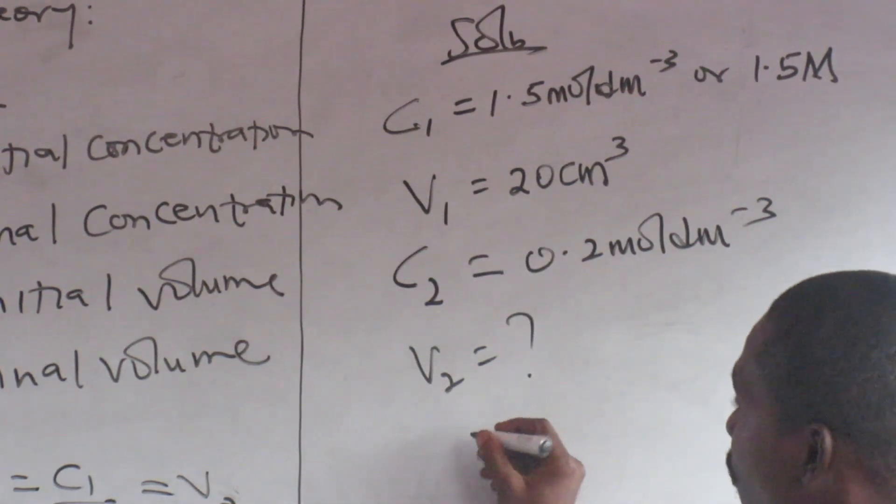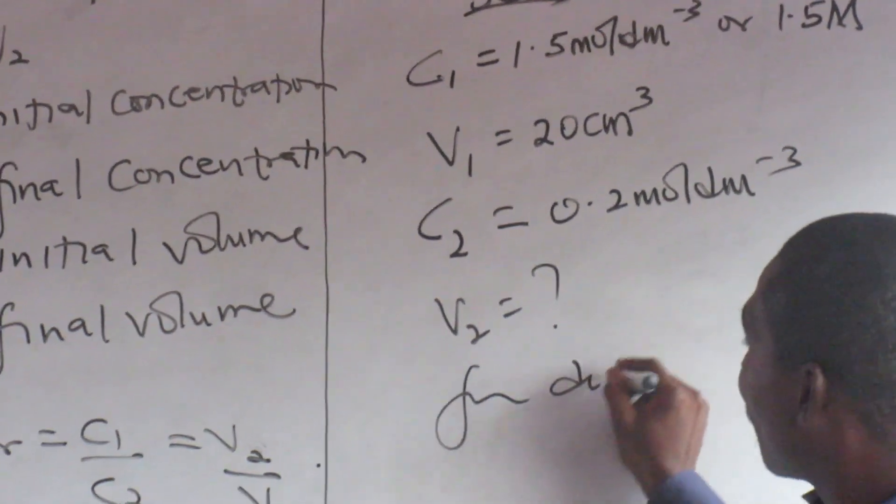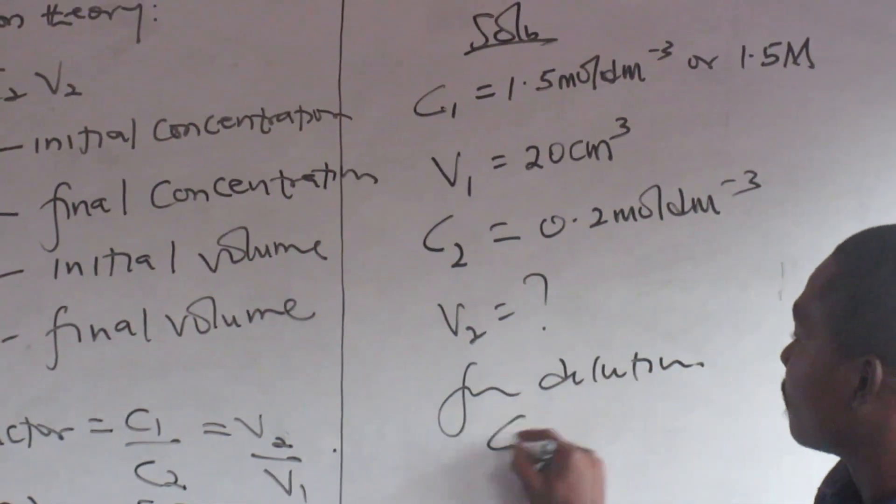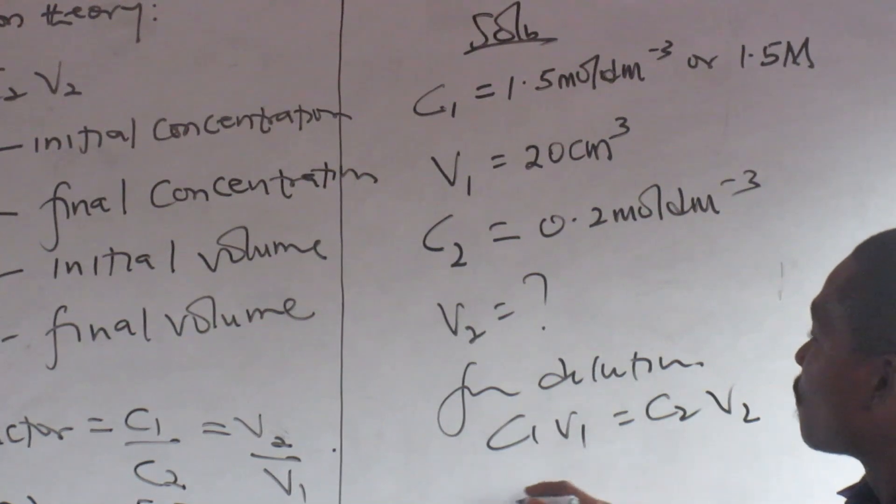C1V1 equals C2V2. That is the dilution theory. Initial, final, initial, final. Dilution factor is C1 over C2 or V2 over V1. Let's see the application.